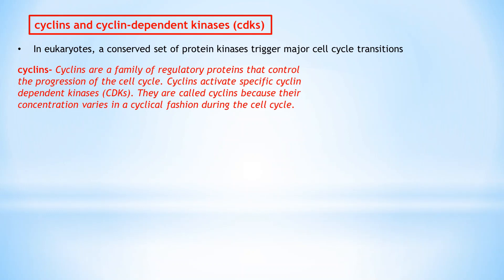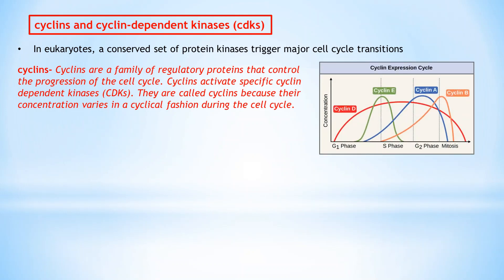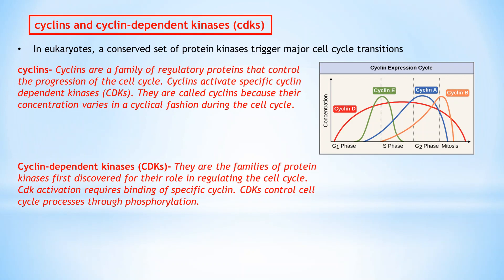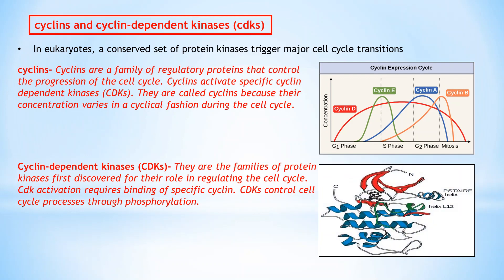When a cyclin and CDK form a complex, the complex will bind to a target protein and modify it via phosphorylation. These proteins are called cyclins because their concentration varies in a cyclic fashion during the cell cycle. Here we can see that different cyclin concentrations increase and decrease in different phases of the cell cycle. CDKs are families of protein kinases first discovered for their role in regulating the cell cycle; CDK activation requires binding of a specific cyclin. In higher eukaryotes, different members of the cyclin and CDK families control progression through distinct phases.